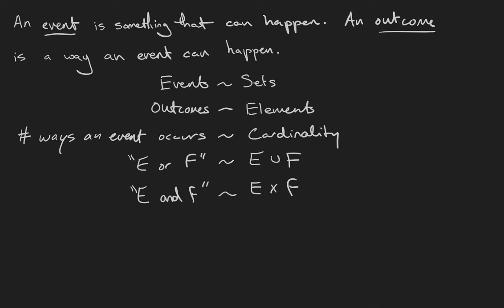Loosely speaking, an event is something that can happen. An outcome is a way that an event can happen. We're going to make the identification between events and sets, between outcomes and the elements of those sets.